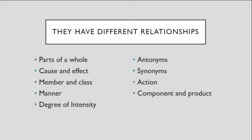One of the things that makes analogies so difficult is that we have different types of relationships that are used. When we make these comparisons, we can look at parts of a whole. So in the cake we have the frosting, the cake itself, the candles, and all of that good stuff. And I can compare those to elements of the U.S. government — like the executive branch, the judicial branch, and the legislative branch.